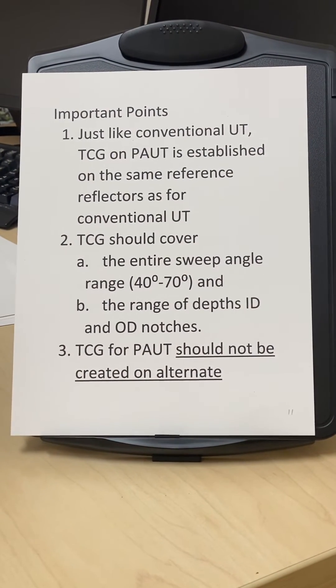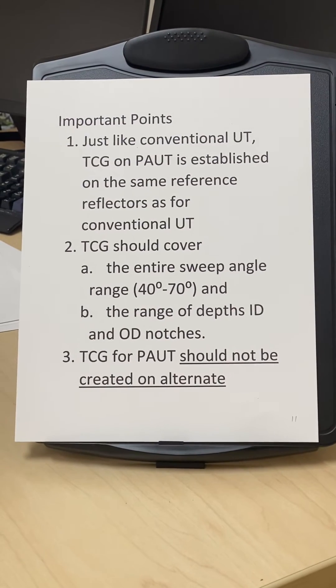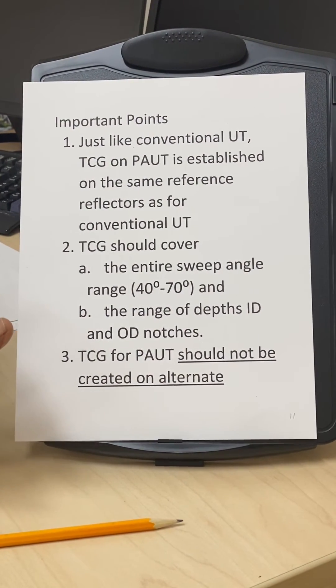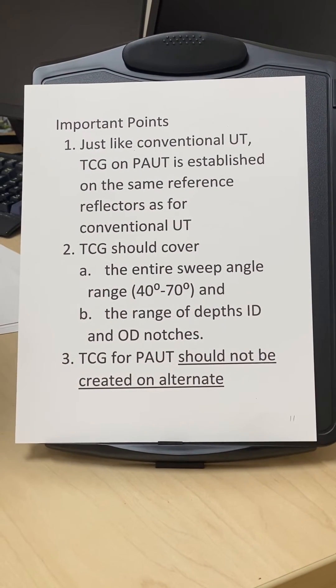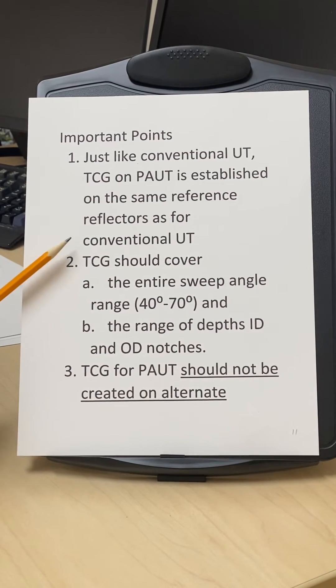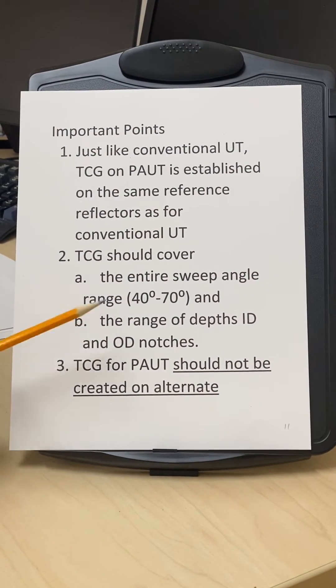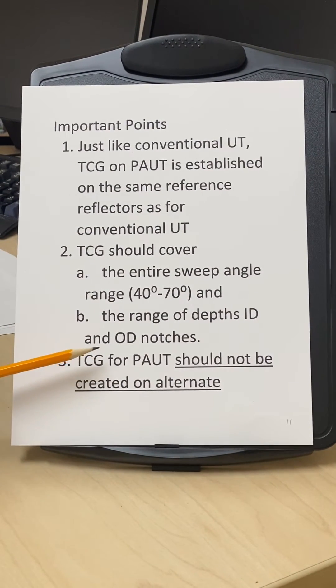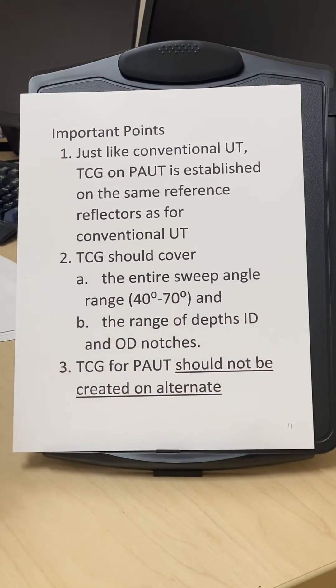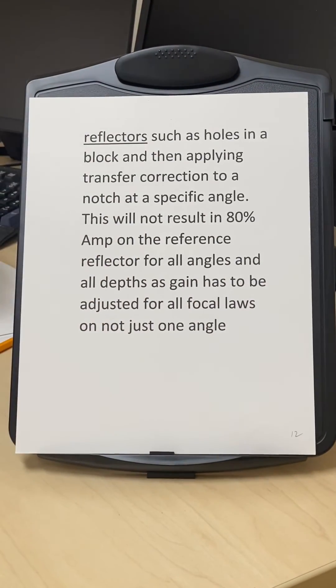Important points for application of the TCG: Just like conventional UT, TCG on PAUT is established on the same reference reflectors as for conventional UT. If the code says use the notches, you use the notches. If it says use a certain size of side drilled hole, you use that specific side drilled hole. You don't want to use an IIW block or something else to set up your calibration reference levels. TCG should cover all the angles like 40 to 70 degrees and the range of depth to cover the full range for the weld being inspected, typically up to 2T.